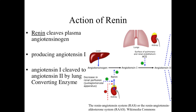Focusing on the actions of renin: renin cleaves the plasma protein angiotensinogen — produced in the liver — producing angiotensin I. An enzyme called lung-converting enzyme then converts angiotensin I into angiotensin II. So we take an inactive molecule, prime it, and produce angiotensin II, which is an active molecule.